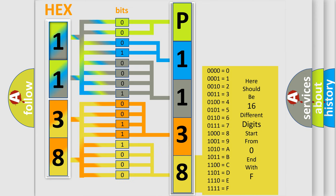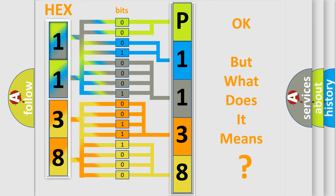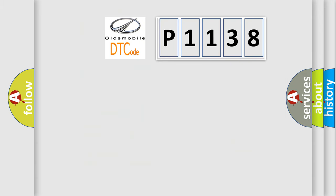We now know in what way the diagnostic tool translates the received information into a more comprehensible format. The number itself does not make sense to us if we cannot assign information about what it actually expresses. So, what does the diagnostic trouble code P1138 interpret specifically for Oldsmobile car manufacturers?